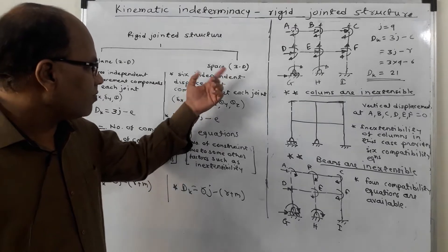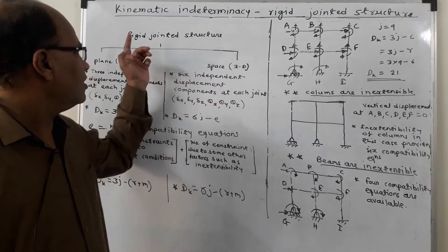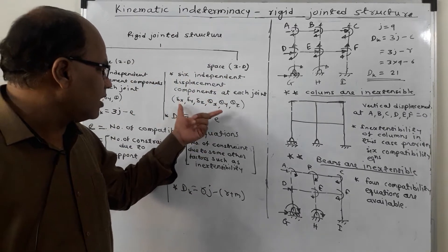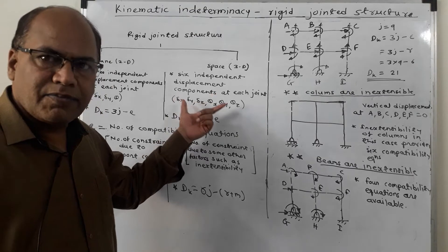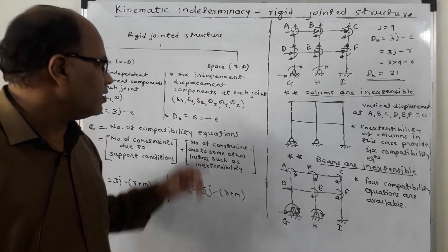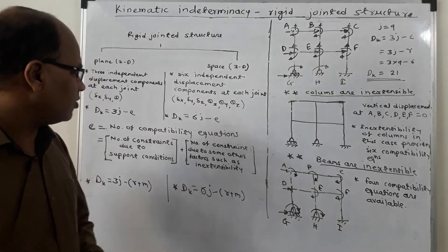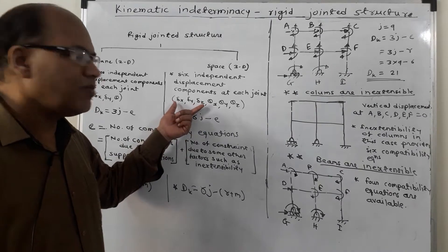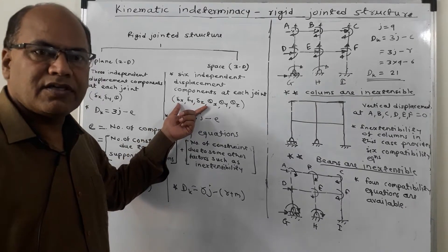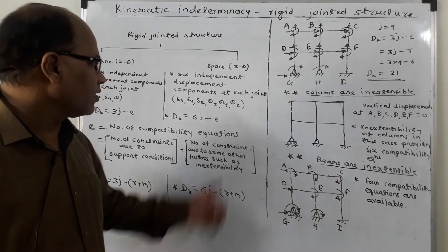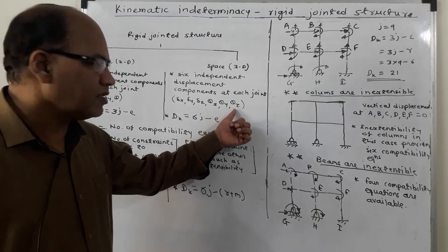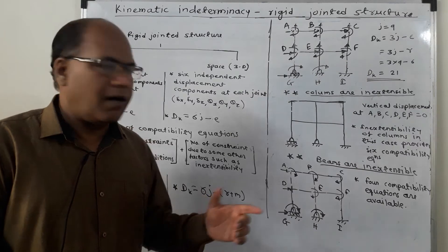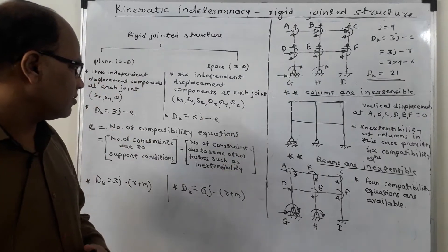Similarly, in case of 3D rigid jointed structures, there are 6 independent displacement components which can happen at each joint. Delta x, delta y, delta z are the linear displacement components along the reference directions, and theta x, theta y, and theta z are the rotational displacement components about the reference axes.